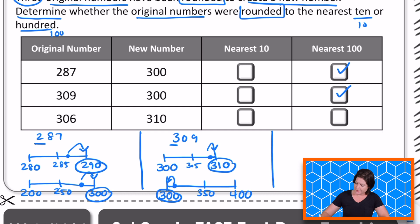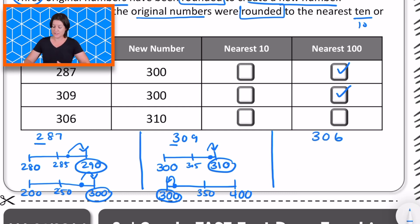Let's do that last one 306. And the new number that was created is 310. Now I'm guessing that it's to the nearest 10 because I know 306 would round up to 310. It's closer to it. But let's make sure we have 30 tens in 306. So that would be between 30 tens or 300 and 31 tens or 310. Halfway would be 305 and 306 is just past it, rounding up to 310. So yes, we are rounding to the nearest 10 there.